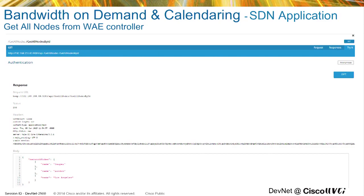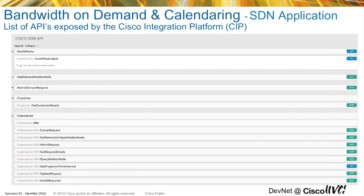Behind the scenes, I want to show what's happening. What kind of APIs am I using from the controller? This is a 'get nodes' API I use from the controller — this is how I get all the nodes in the network. And these are the APIs I'm exposing on the SIP platform. My UI is using all these APIs. By bringing in the power of the SIP platform, which has both ESB and API capabilities, we make this platform very powerful.